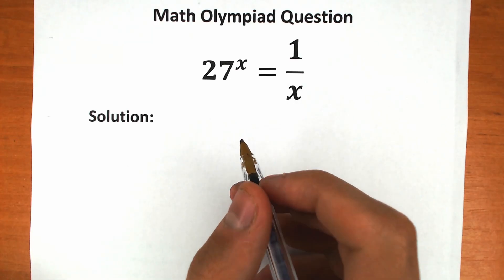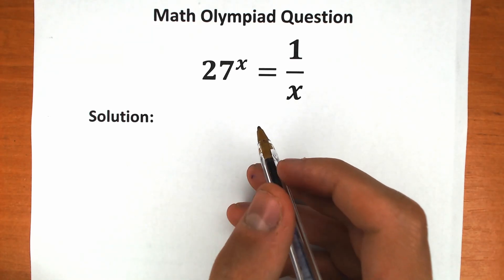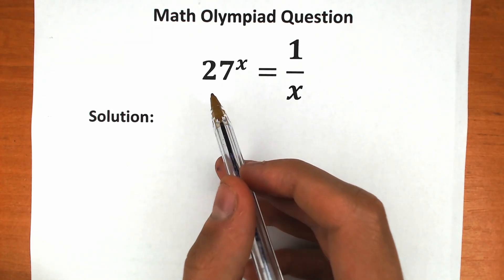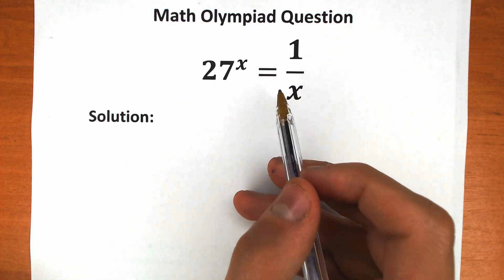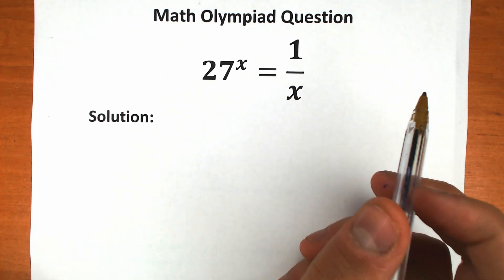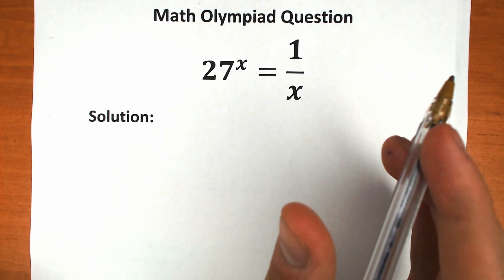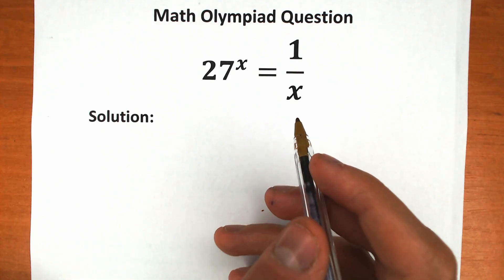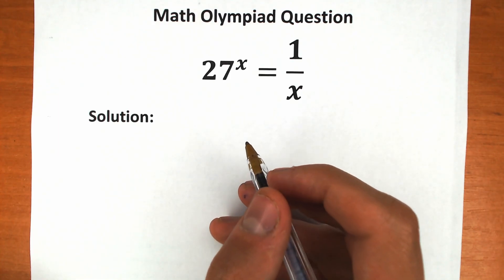Welcome back to my channel, Hiya Mathematics. We have a really interesting challenge today: the exponential equation 27 to the power x equals 1 over x. How can you solve this question? In this video I'm going to fully explain how to solve it step by step. Right now let's try to solve it.